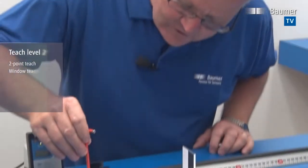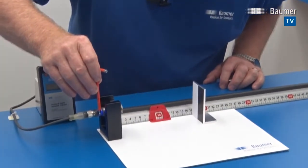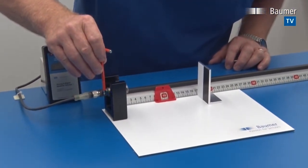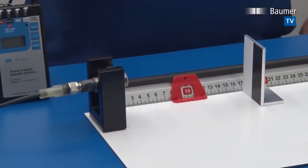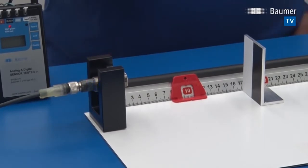Having gone through teach level one, let's move on to teach level two. Teach level two is accessed by using qteach for four seconds. After four seconds the LED flashes at twice the speed as before. So now we can program a window within which the sensor will detect the target.